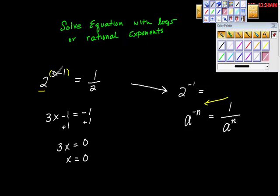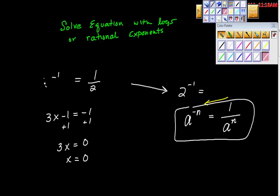We get 3 times 0 is 0, 0 minus 1 is negative 1, so that would turn into 2 to the negative 1st power. And using this rule from Algebra 2, an equivalent form of 2 to the negative 1st power is 1 half. And 1 half equals 1 half.